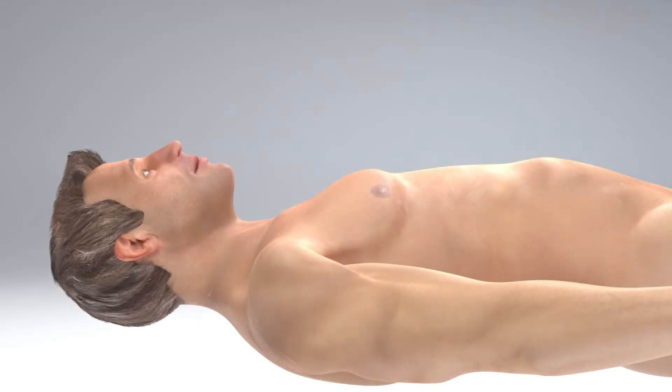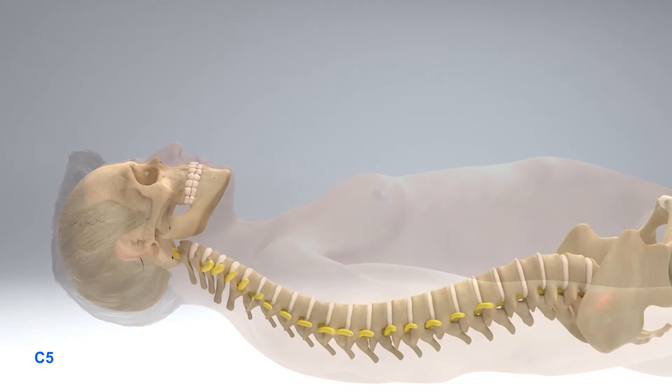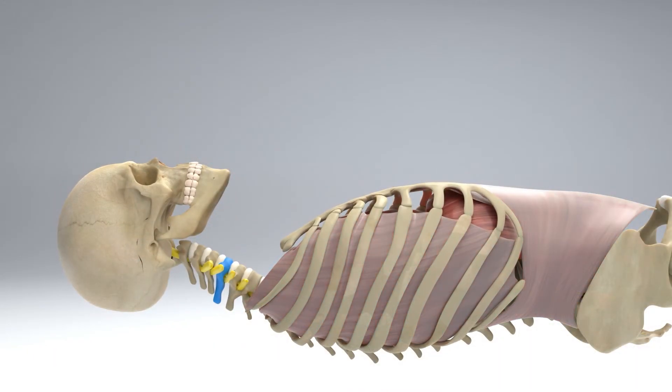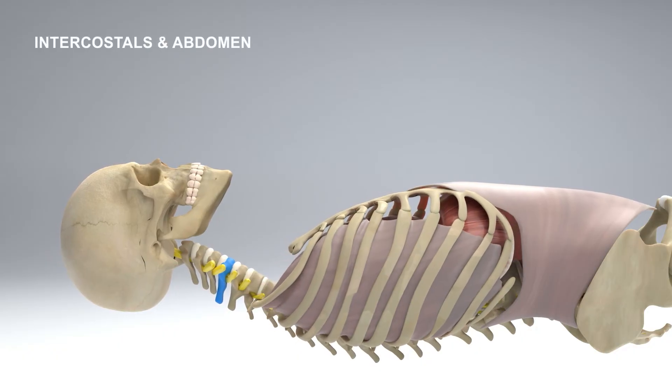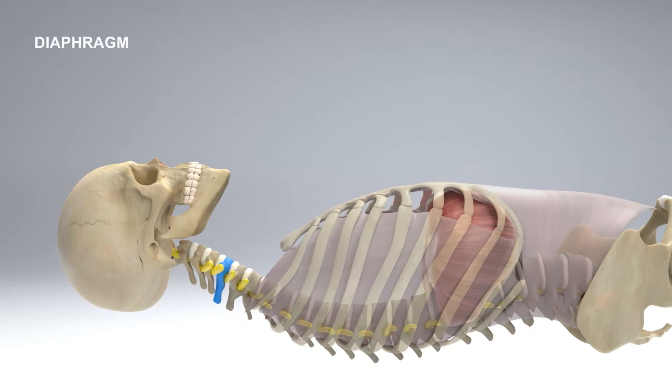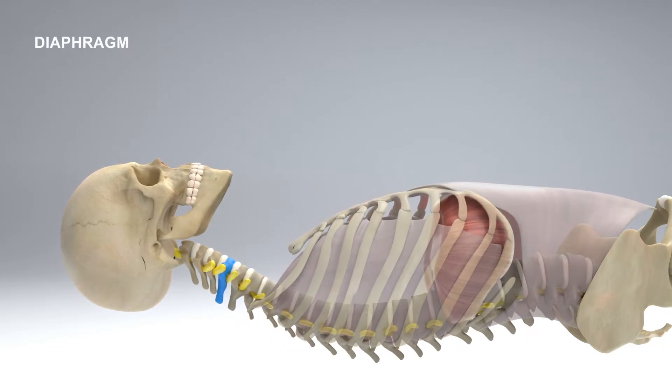This person has recently suffered a spinal cord injury at the level of C5 in the neck. This means they can't use their intercostal or abdominal muscles to breathe because they are paralyzed. Their only working breathing muscle is the diaphragm.